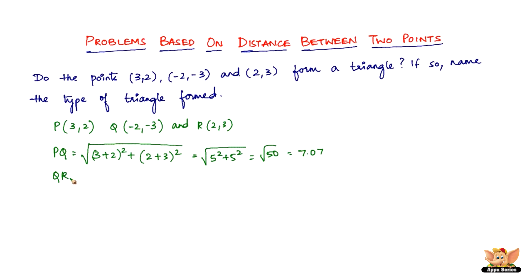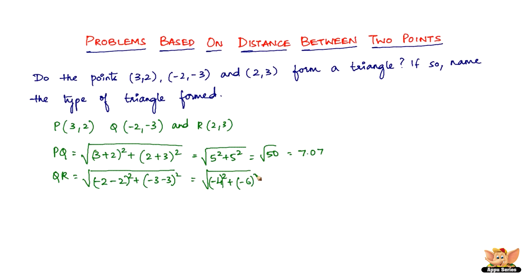Then we've got QR. QR is the square root of (-2 - 2)² plus (-3 - 3)², which is square root of (-4)² plus (-6)². Minus 4 times minus 4 is plus 16, and minus 6 times minus 6 is plus 36. So 36 plus 16 is 52, giving us square root of 52, approximately equal to 7.21.